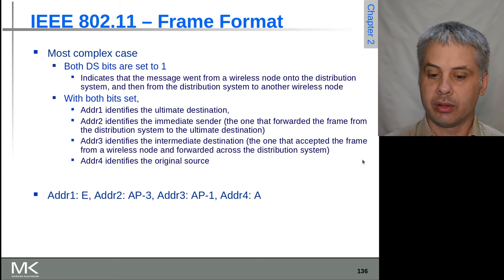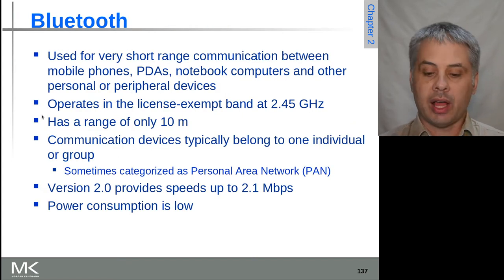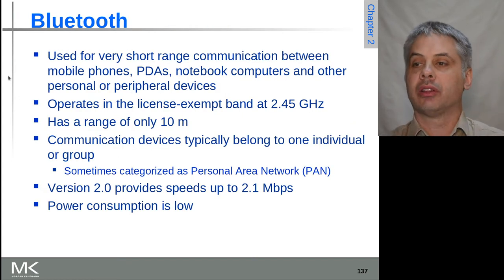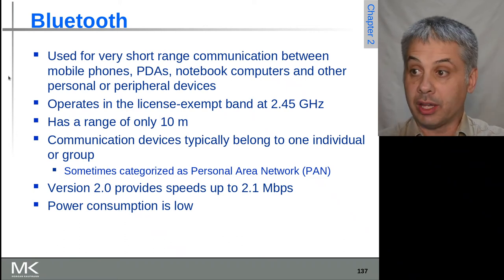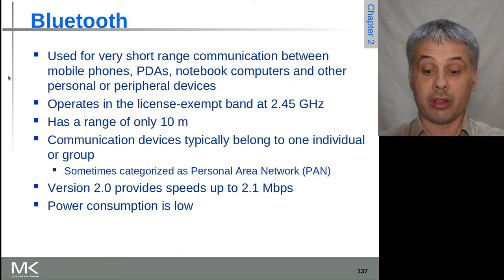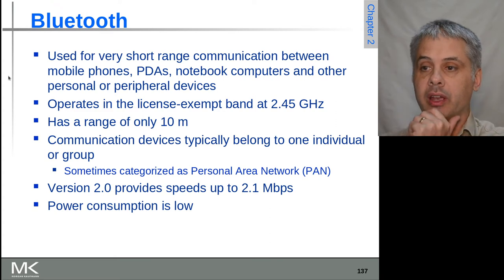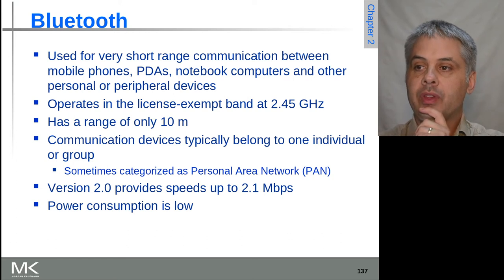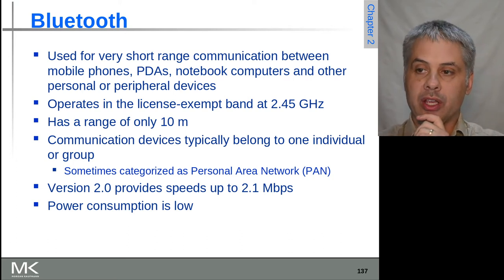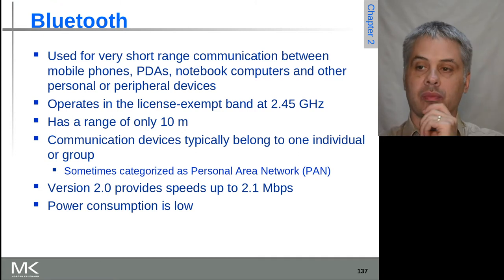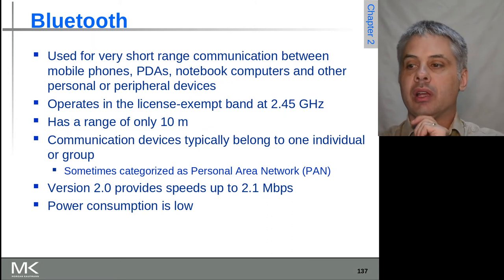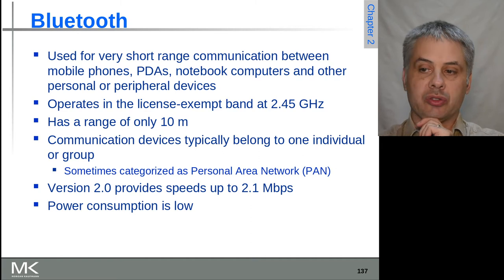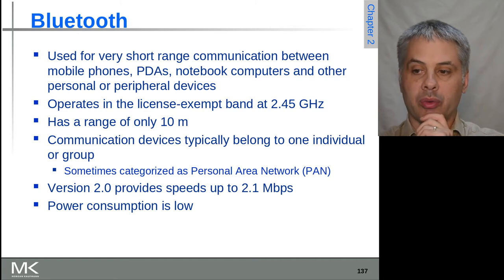Moving on from Wi-Fi to Bluetooth: Bluetooth was intended for quite different purposes. It still operates in the same band as Wi-Fi, so mutual interference has to be managed in laptops and phones. It was designed for very short-range personal area network communication — things like headsets — with an intended range of only about 10 meters, which gives rise to the classification of a personal area network.